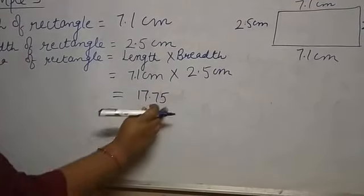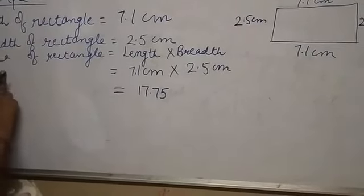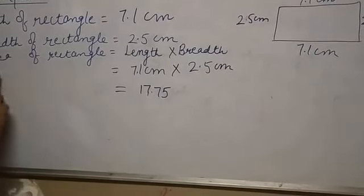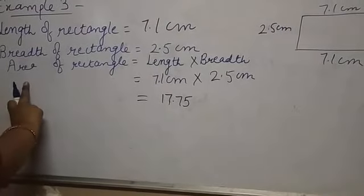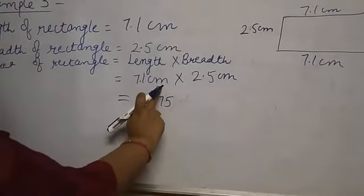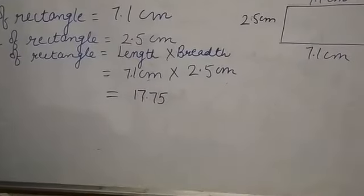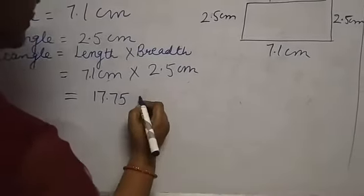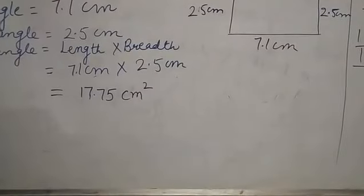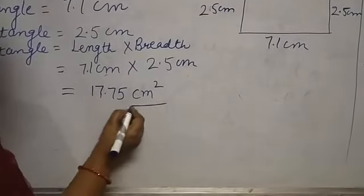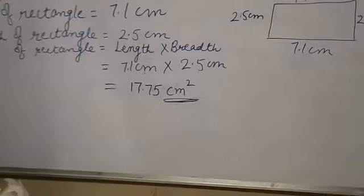What is the unit? Since this is area, the unit is centimeter × centimeter = centimeter squared (cm²). Don't forget to write the unit in any case.